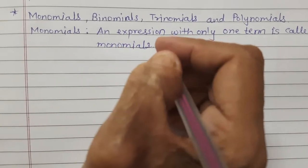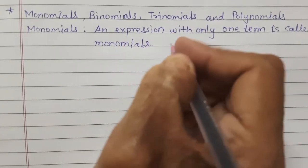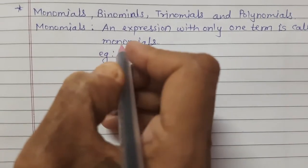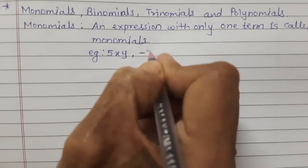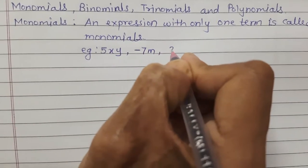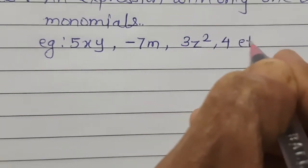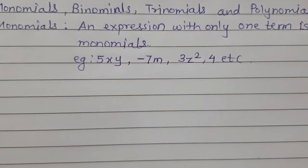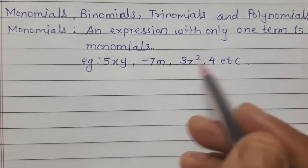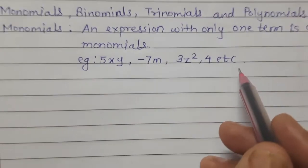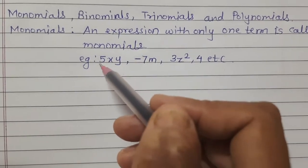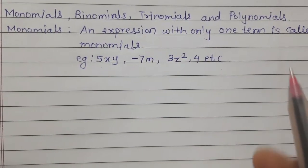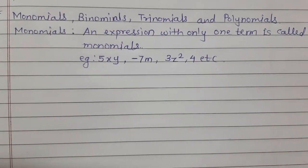Examples of monomials: 5xy, minus 7m, 3z square, 4, etc. These are the examples of monomials because each has only one term.